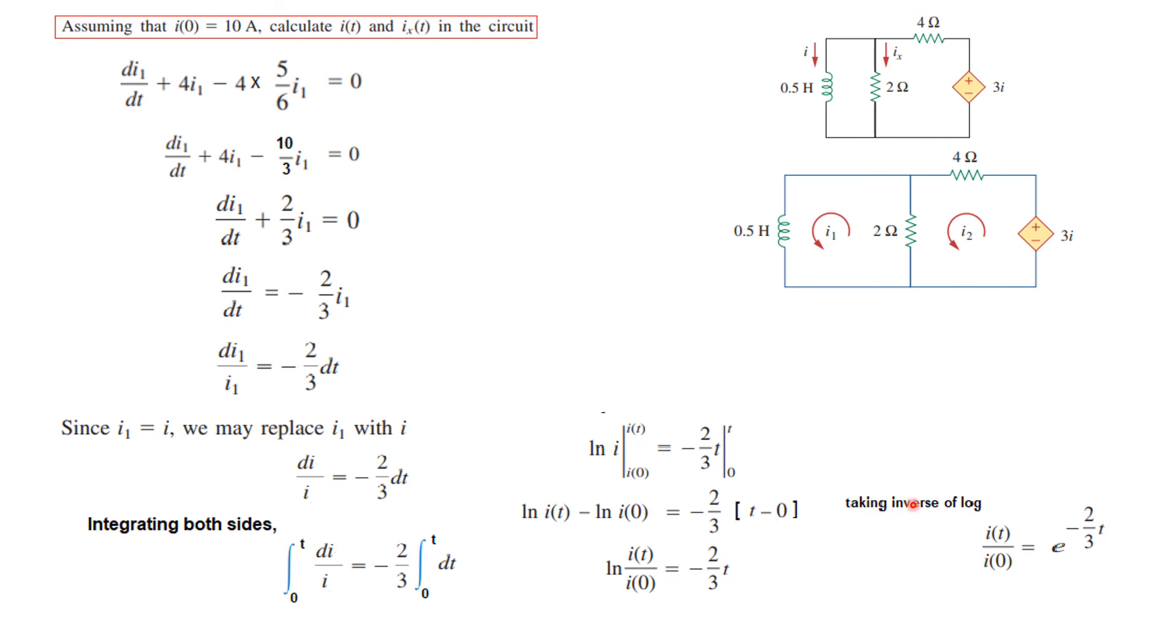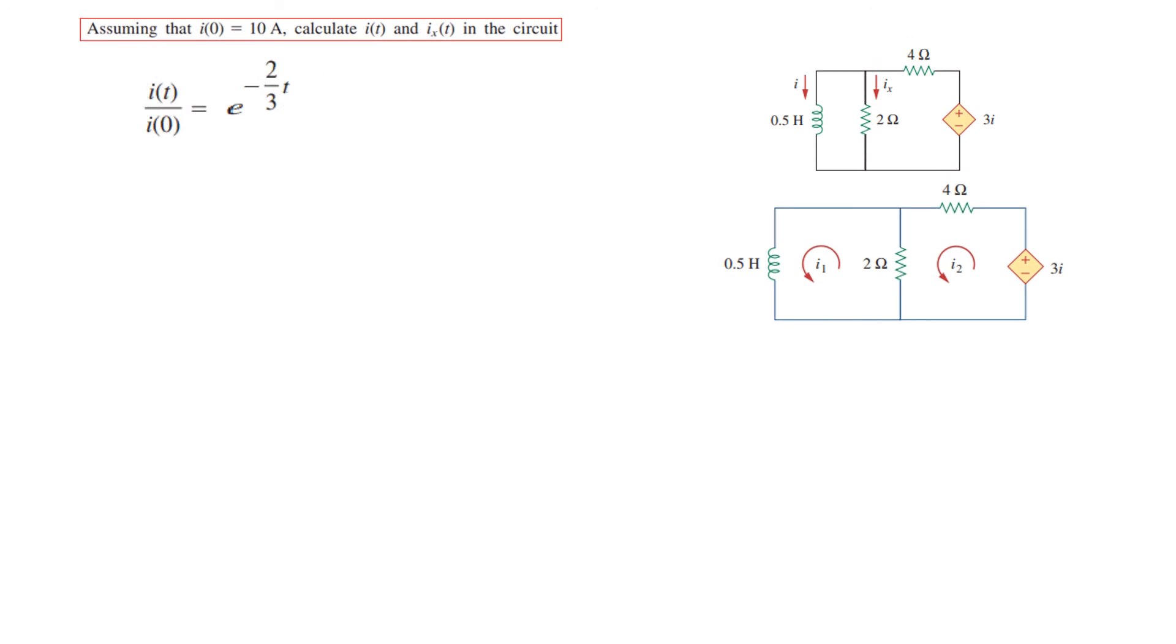Taking the inverse of the log, we get I(t) = I₀e^(-2t/3). Now we take this on the right-hand side to get I(t). Putting the value of I₀, this is the current equation.